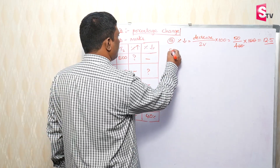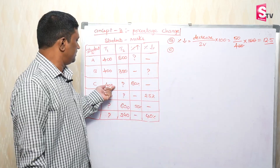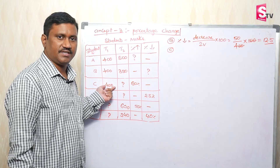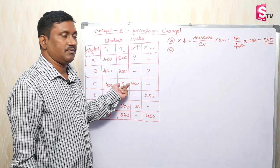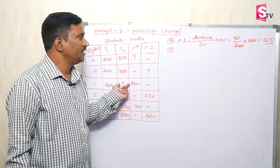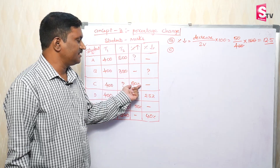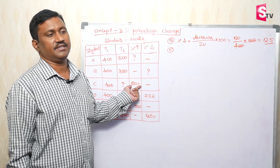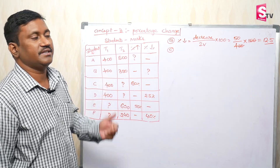Next, compare C student. C has 400 marks in the first test. We know the final test marks, but what is the percentage increase in final marks? There is a 60% increase.